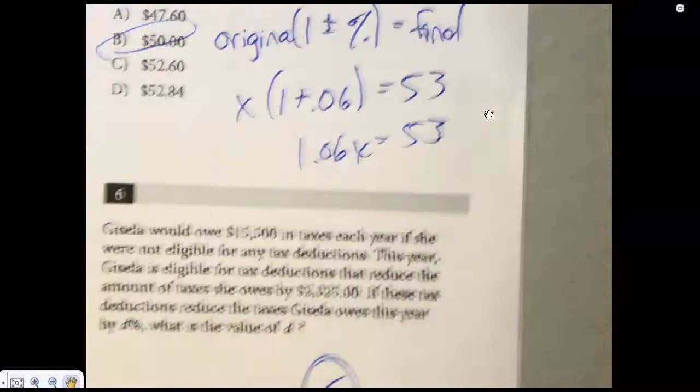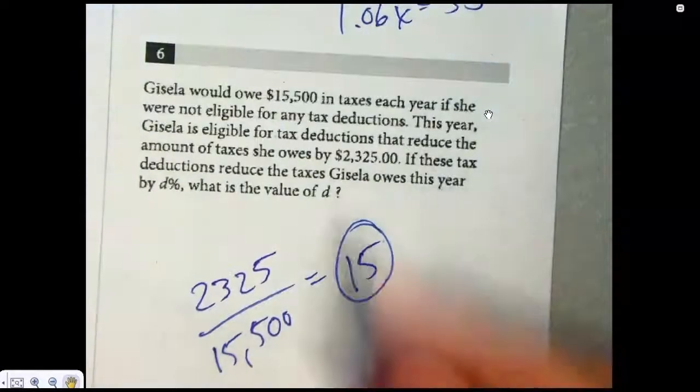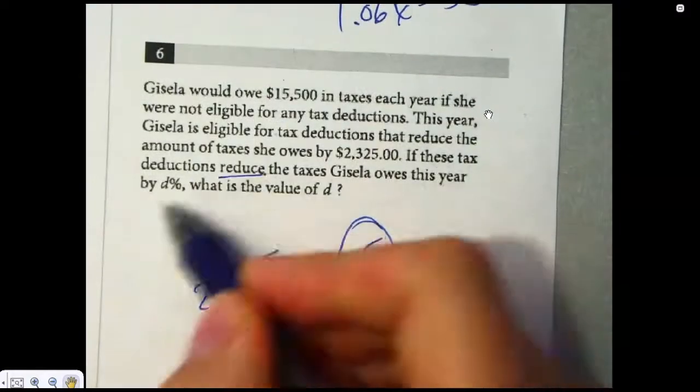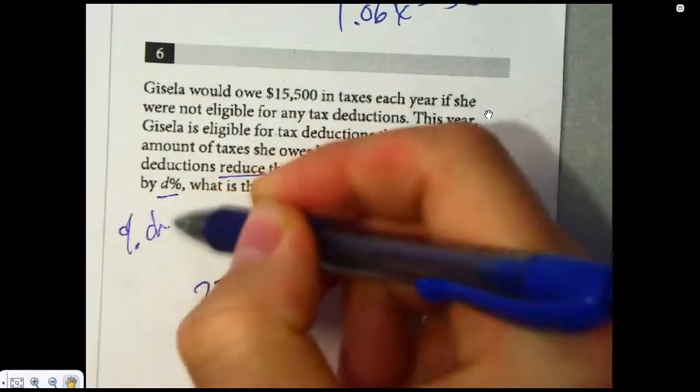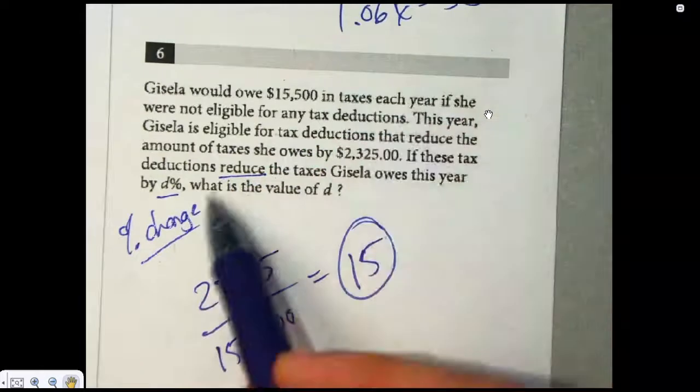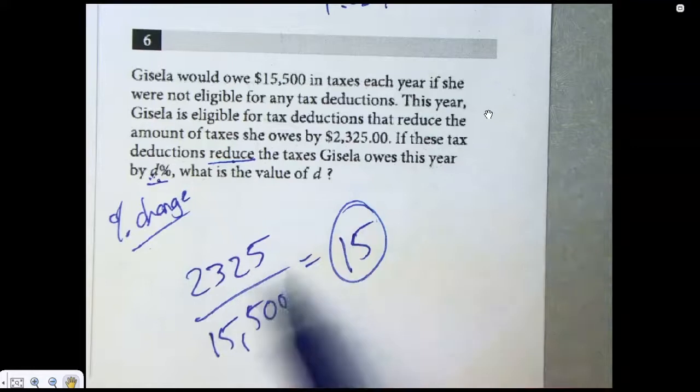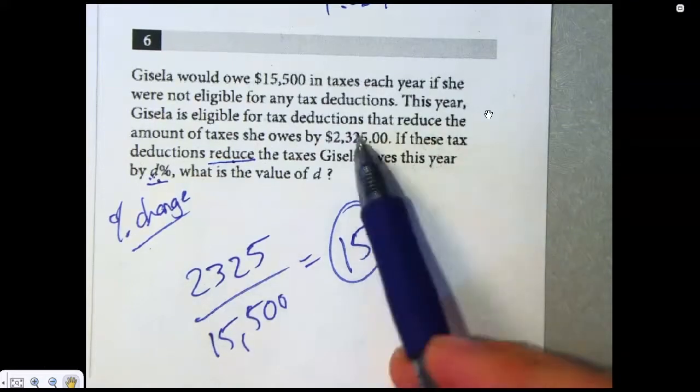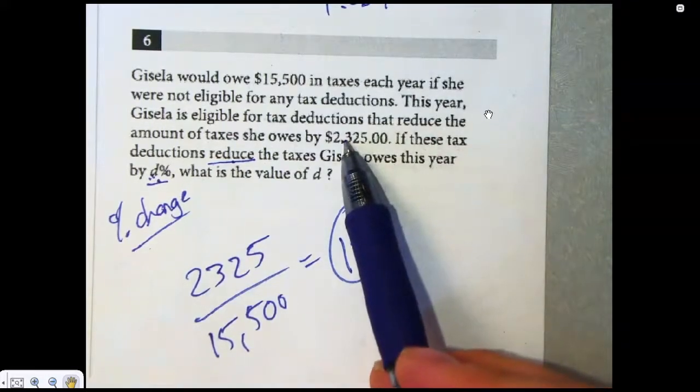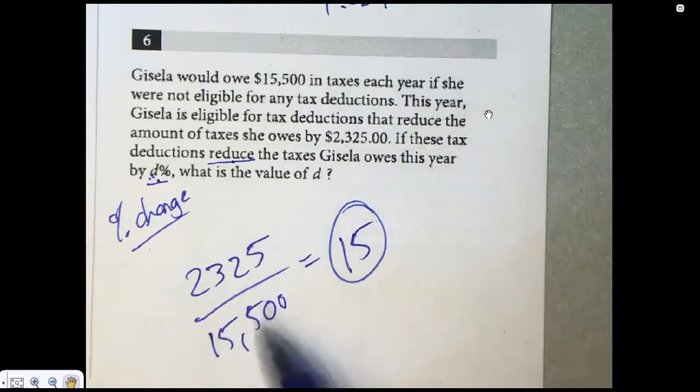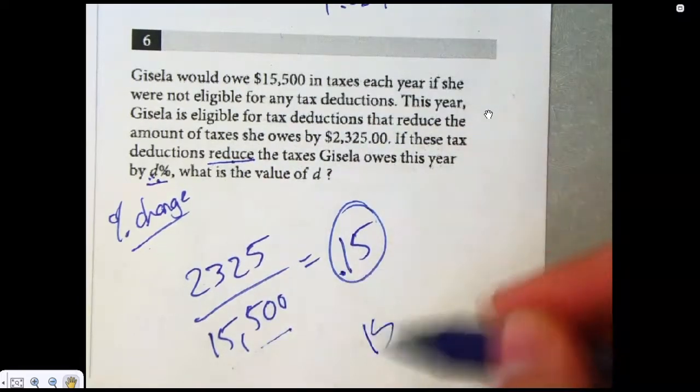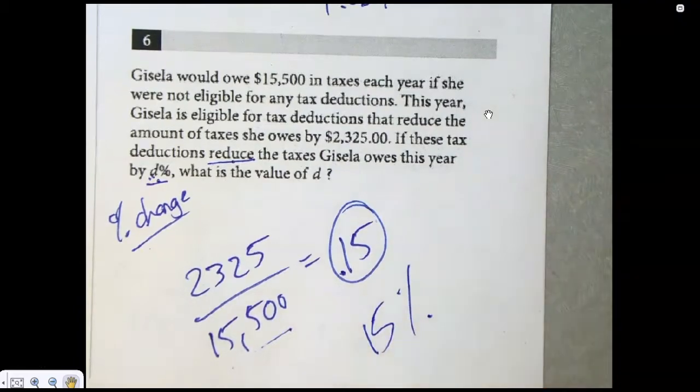Number six. If they reduce by D percent, what is the value of D? So there, again, they're basically saying, what's the percent change? They're saying, what percent? They're asking it by D. Did we reduce by? That's a percent change. So we take the amount that they changed, and that is 2325, because that's the reduction, that's the change, divided by the original. And this is 0.15, which makes it 15%.